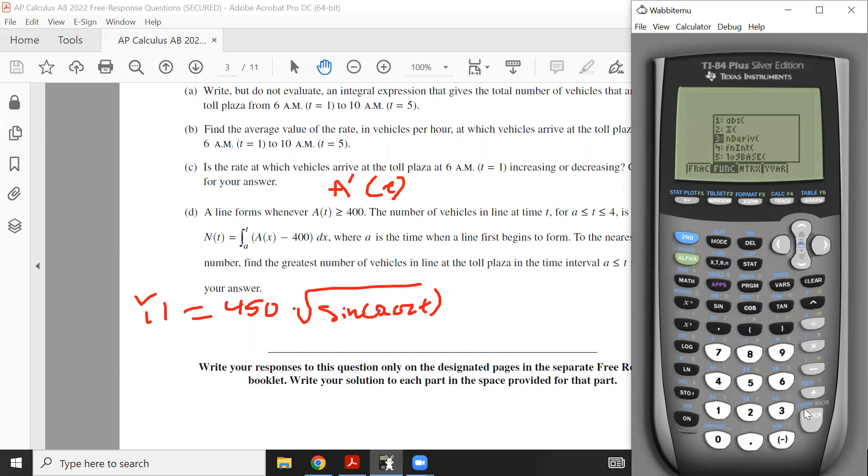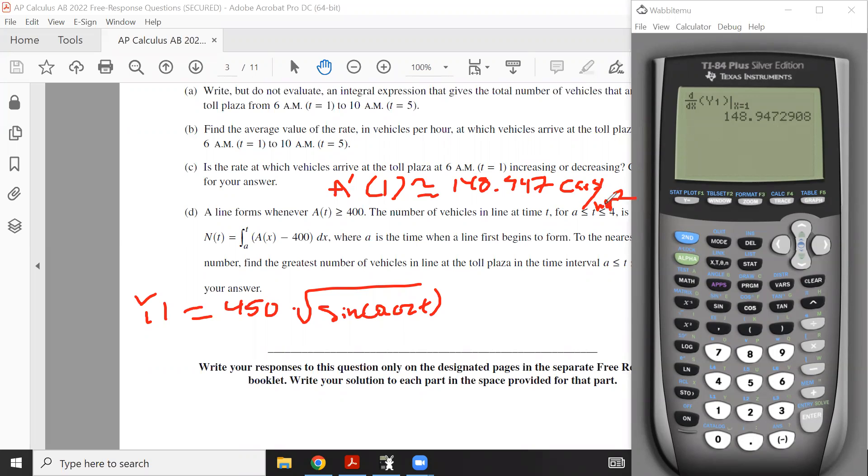And then hit alpha window. You're going to select option three. Obviously, you're going to inspect the X. Alpha trace is what you call apply one. And you're going to evaluate this at one. And the calculator will say 148.94. Clearly, that's a positive value. The derivative at one, you'll want to show that as 148.94. Do three decimal places, please. And that's going to be cars per hour squared. I think you'd have to put the units, cars per hour squared. And it's positive, so it's increasing. And your reasoning would be because A' is positive.